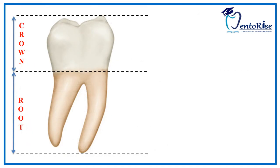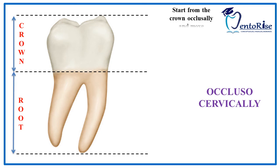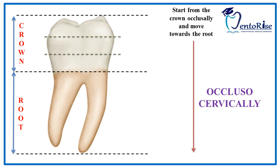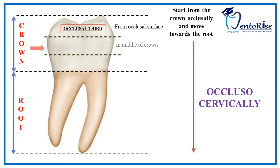Likewise, occlusocervically implies: first, since the occlusal surface is present only in premolars and molars, we are dealing with these teeth only. Second, you have to start from the occlusal surface and then move down cervically towards the root. So, as shown in the figure, on dividing the crown into three equal parts, the one third near to the occlusal surface is called the occlusal third, the one third in the middle of the crown is called the middle third, and the one third near to the cervical line is called the cervical third.